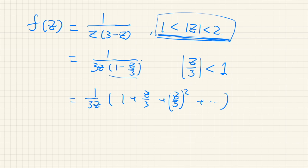So this is 1 over 3z sum, n from 0 to infinity, z over 3 to the power of n.